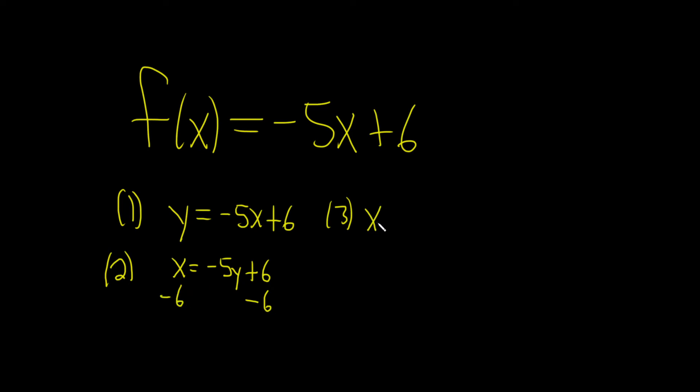So we have x minus 6, and that's equal to minus 5y. And the y is being multiplied by negative 5, so now we can just divide by negative 5. So this is x minus 6 over negative 5, and that's equal to y.